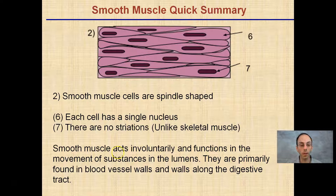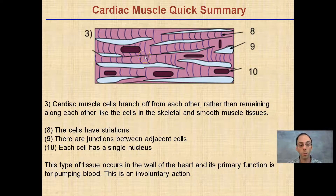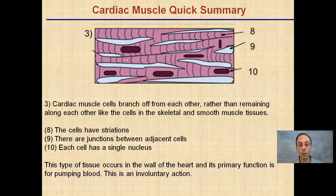Cardiac muscle cells branch off from each other rather than remaining aligned like skeletal and smooth muscle cells. They have striations as seen in skeletal muscle, and there are junctions between adjacent cells. Each cell has a single nucleus. Cardiac muscle occurs in the walls of the heart and its primary function is pumping blood — this is also an involuntary action; we don't consciously think about our heart beating.